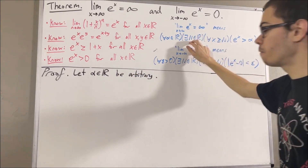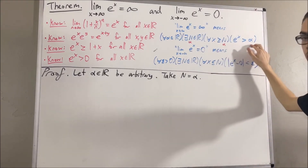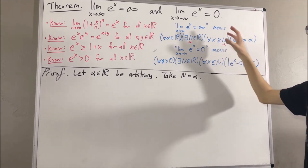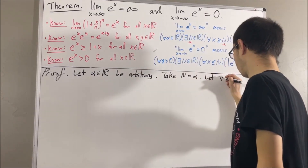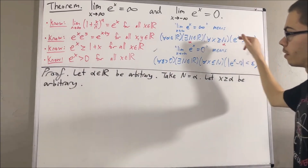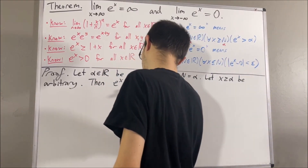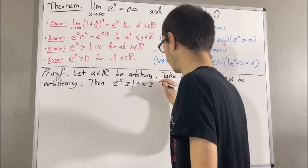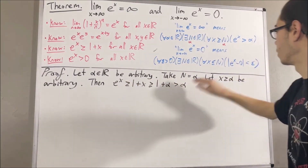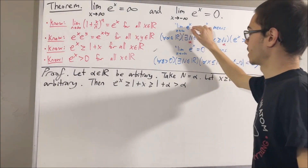Taking capital N to be alpha, we proceed to prove the statement is true. Since we're trying to prove a statement about every real number x greater than or equal to alpha, let's give ourselves an arbitrary real number x greater than or equal to alpha. We want to show that e to the x is greater than alpha. By a preliminary result, e to the x is greater than or equal to 1 plus x, and x is greater than or equal to alpha. So 1 plus x is greater than or equal to 1 plus alpha, which is greater than alpha. Thus e to the x is greater than alpha, which is exactly what we wanted, and we have proven the limit as x approaches infinity of e to the x is equal to infinity.